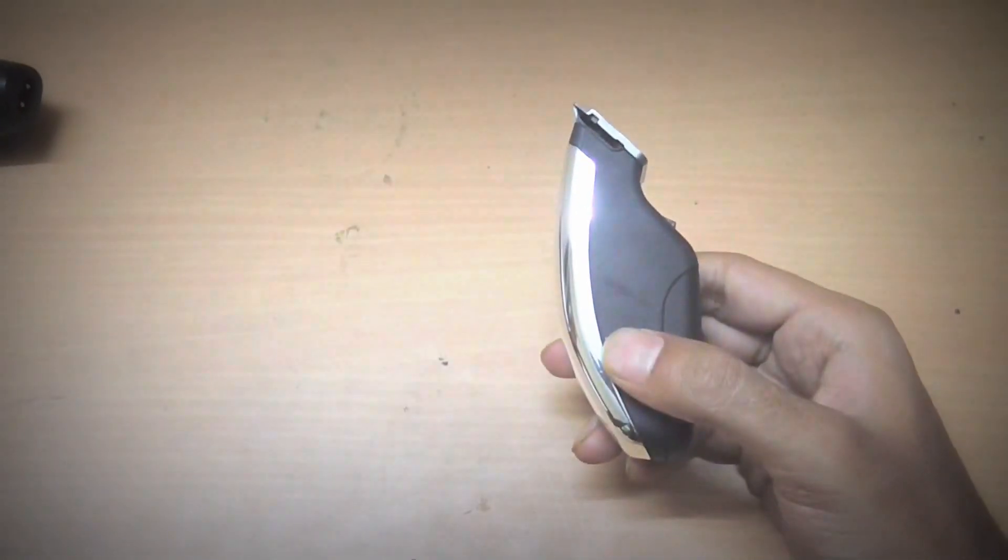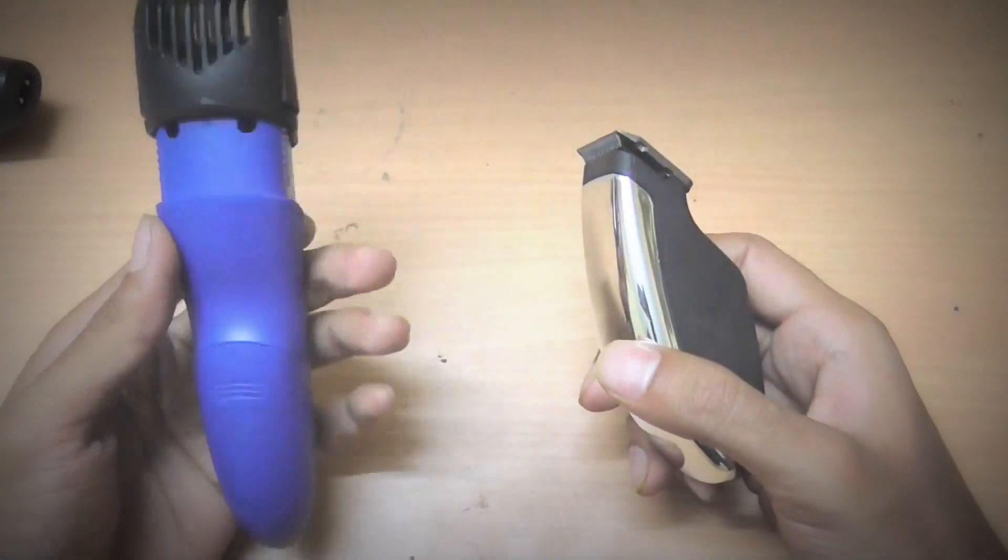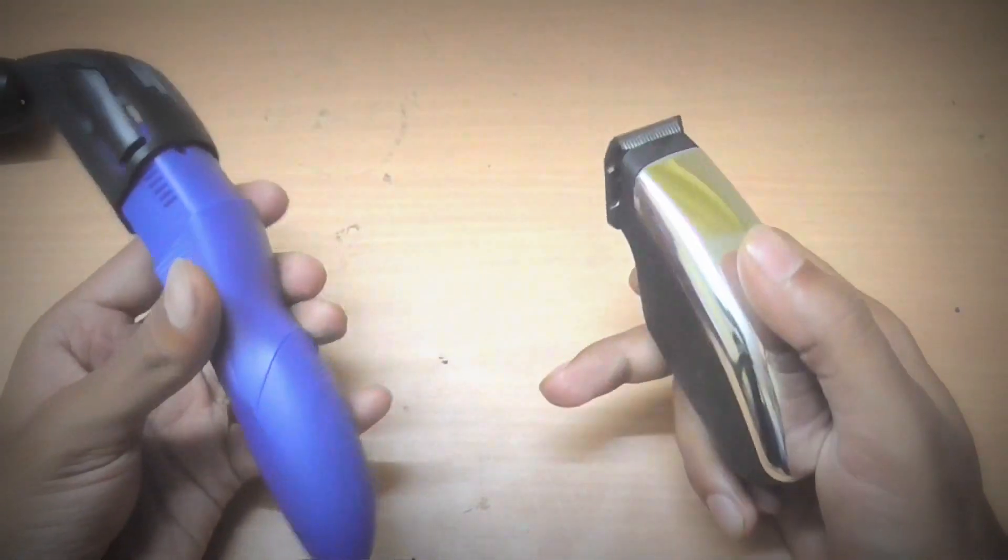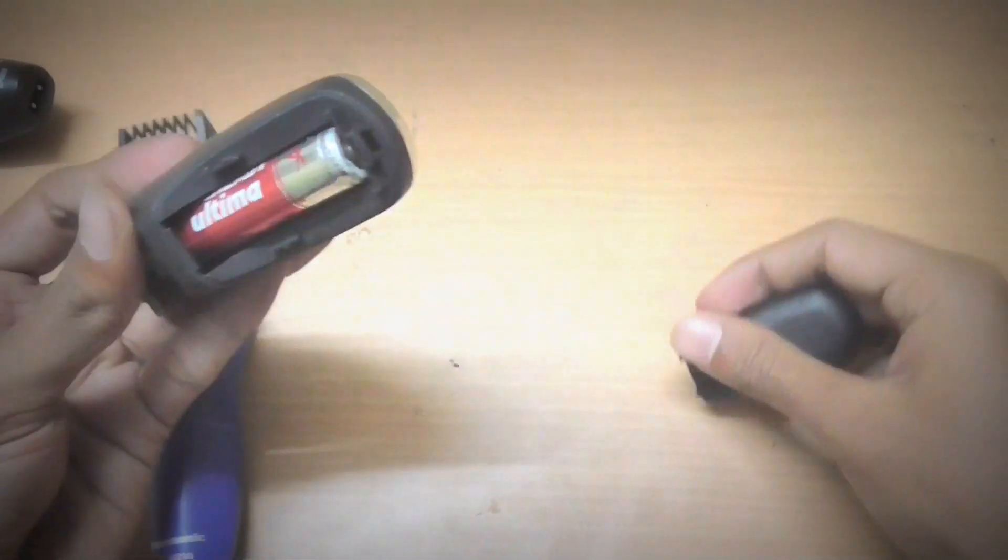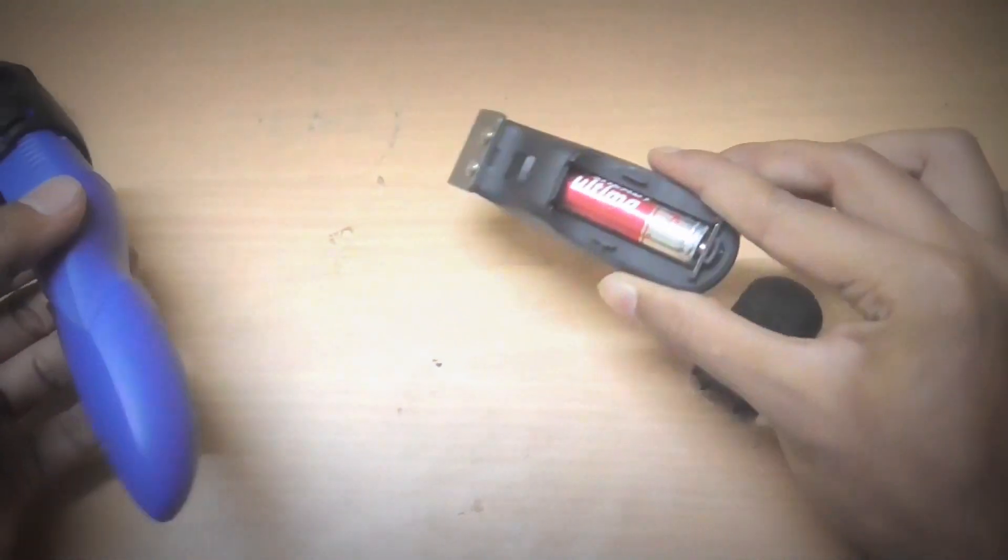Whereas both of these Panasonic ERGB30 and this Wahl don't have an internal battery, but they run on external. It runs on a single AA battery.